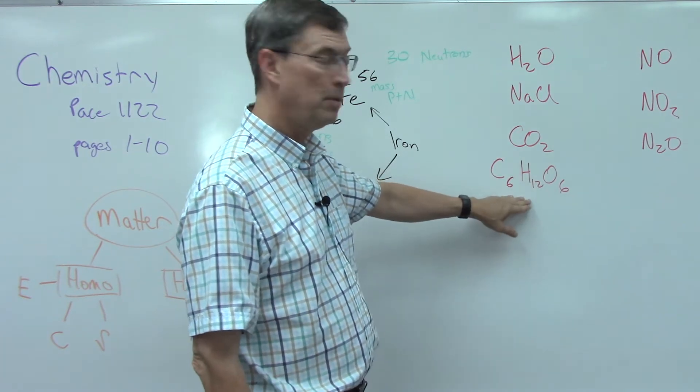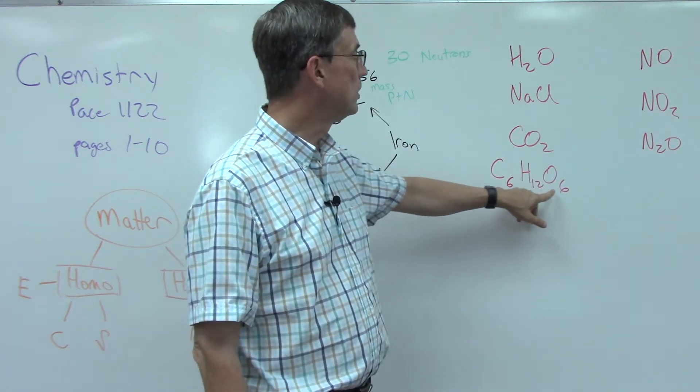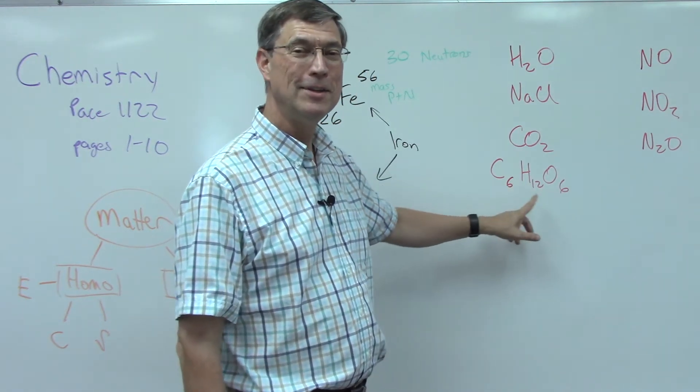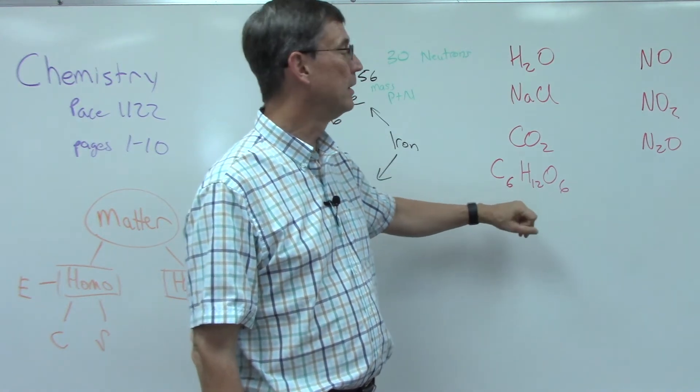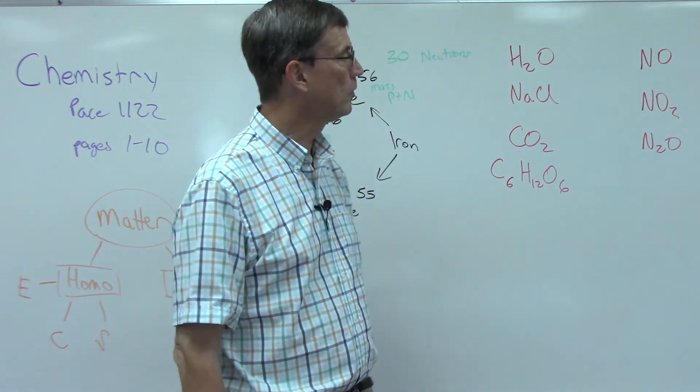Maybe you remember this from biology: carbon, hydrogen, and oxygen - see the CHO for chocolate - and this is the energy that plants produce and that they can live on. C6H12O6, this is called glucose. I'm just showing some examples of compounds.